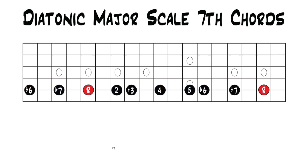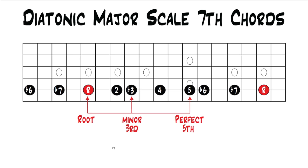Rearranging the intervals again to start on the 6th note of the major scale. Now we have root, 2, flat 3, 4, 5, flat 6, flat 7. Building a triad off the 6th note of the major scale gives us a minor triad. If we stack another 3rd to get to our 7th, we're adding the minor 7th. So we end up with root, minor 3rd, perfect 5th, minor 7th — obviously another minor 7th chord. Building a 7th chord off the 6th note of the major scale gives us another minor 7th chord.